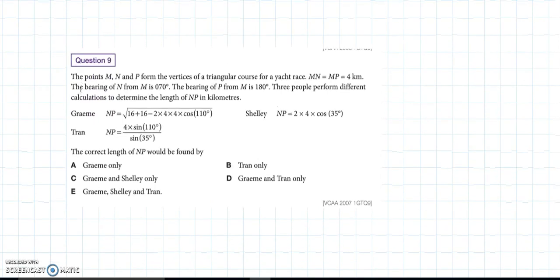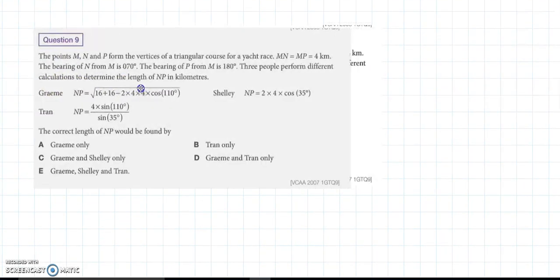Alright, third question. Once again, have a read and consider it and then have a go at answering it. It's again a question 9, so a hard one. Alright, what this is asking is which of these calculations will get us the correct length of NP. Now, we need to start off once again by drawing a diagram. M, N and P form vertices of a triangle course for a yacht race.